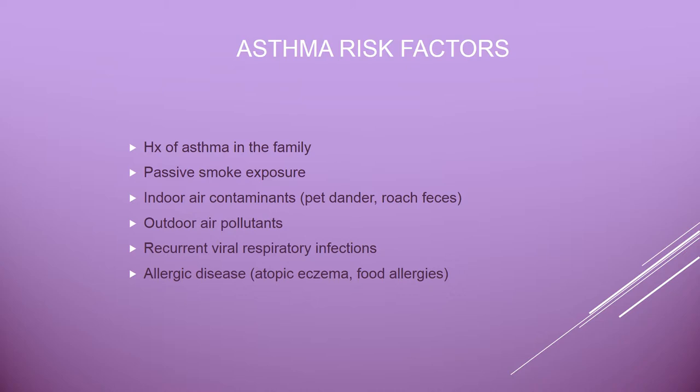Environmental agents like secondhand smoke, pet dander, roach feces, recurrent viral respiratory illnesses, and allergens like hay fever, food allergies, and eczema all contribute to asthma risk. Protective factors include large families, late birth order, child care attendance — which lowers asthma risk — having a dog in the family, and living on a farm. Interestingly, pet dander increases susceptibility but having a dog in the family also decreases risk.